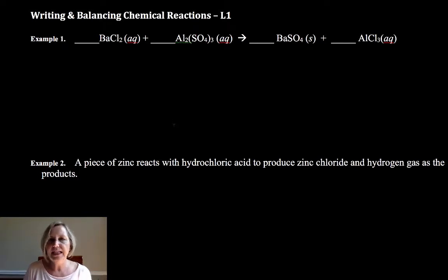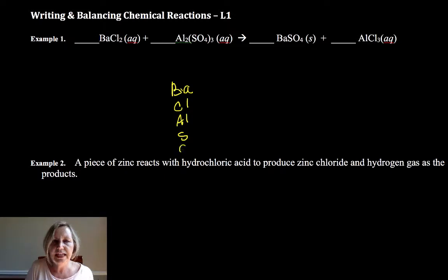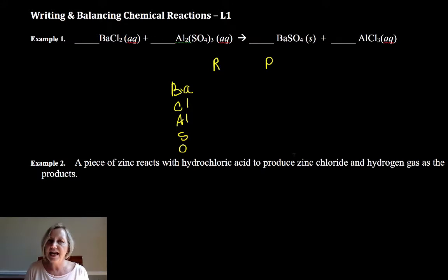To balance a chemical reaction, what I need to do is make sure that I have the same number of each element on both sides. So I need the same bariums, the same chlorines, aluminums, sulfurs, and oxygen — the same on the reactant side as I have on the product side.